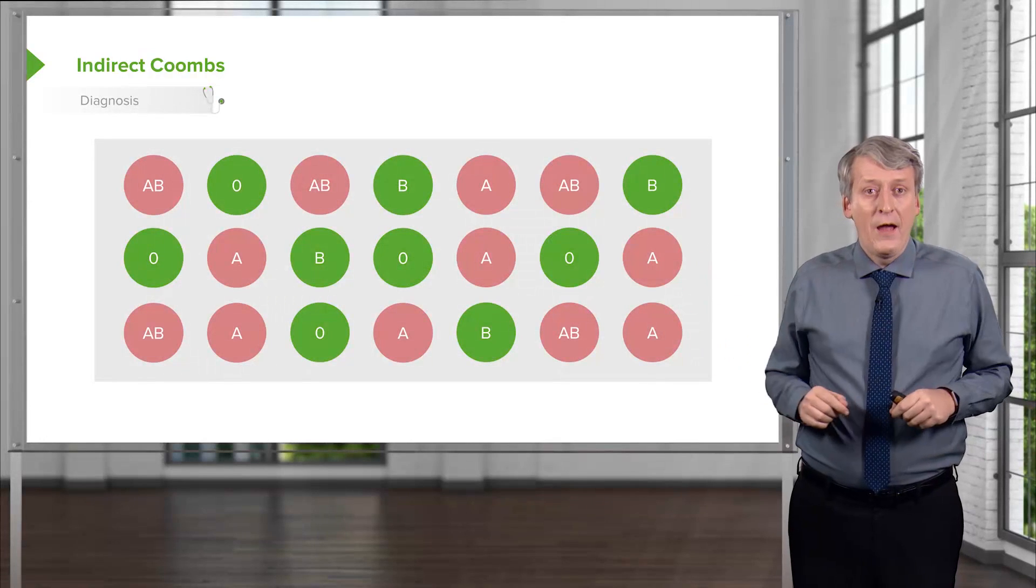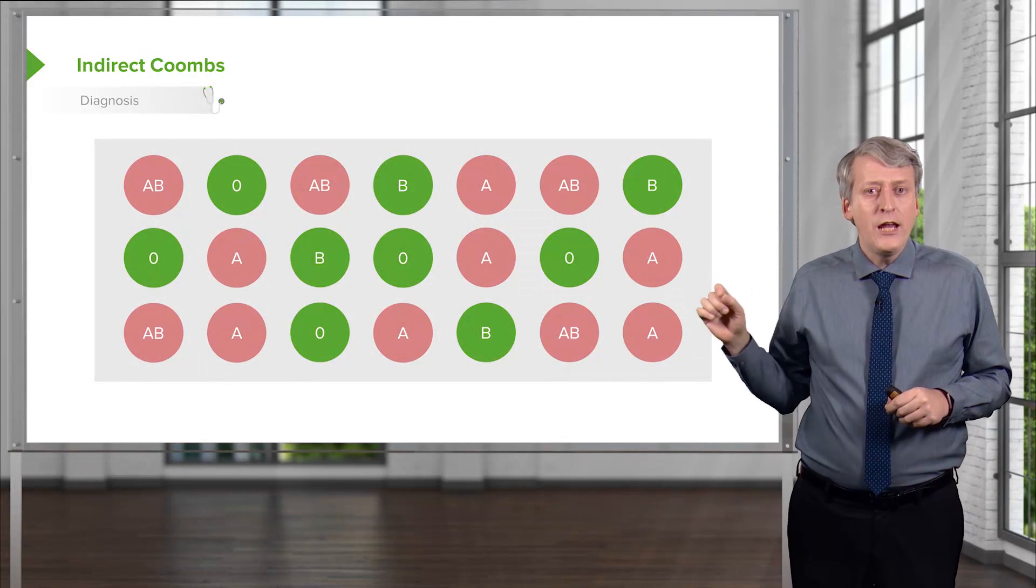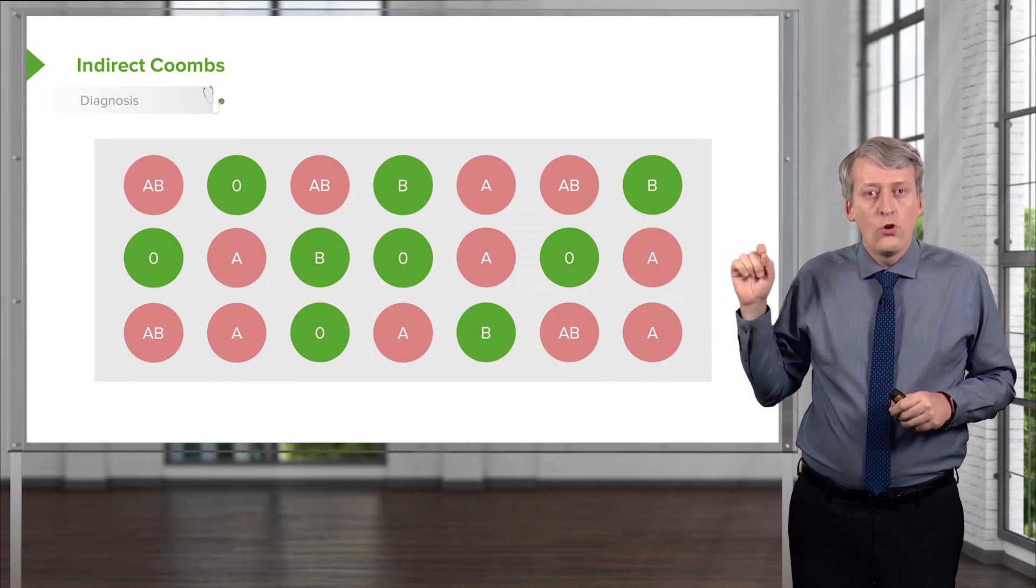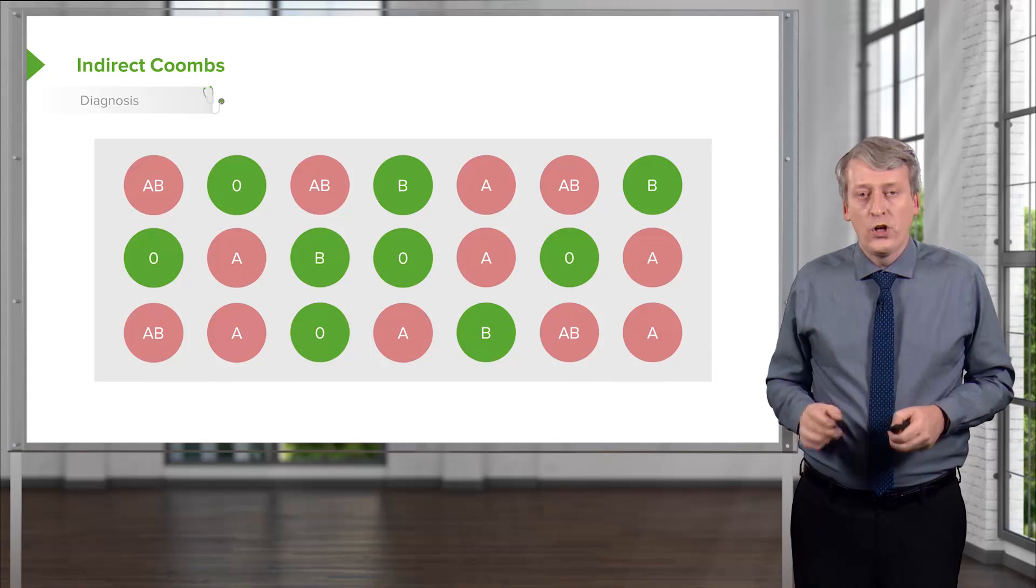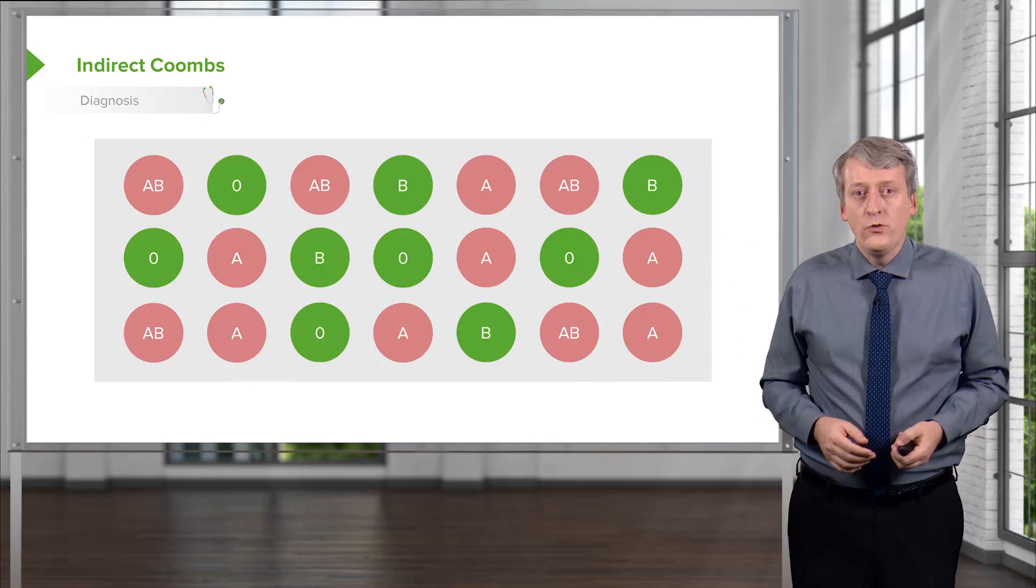But if this were their pattern, I probably would be okay to put in B blood because, look, the A's are all bound and the B's aren't. That's how we determine what blood is safe to be transfused into these individuals.